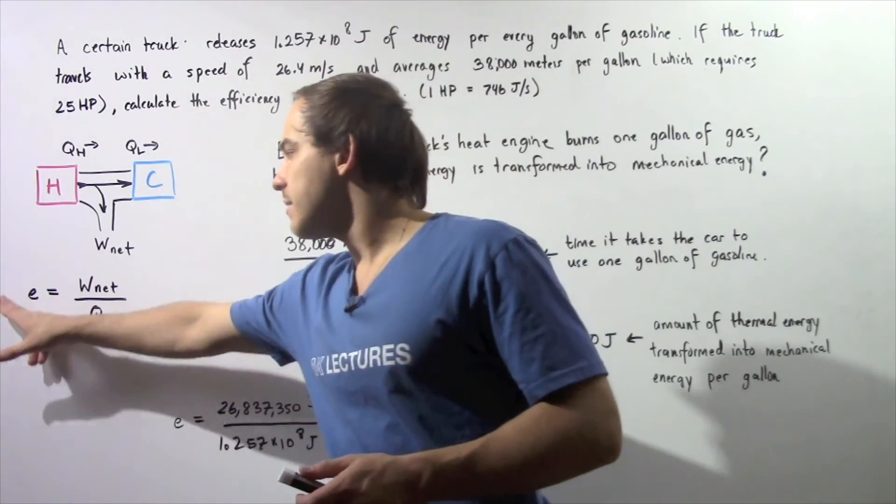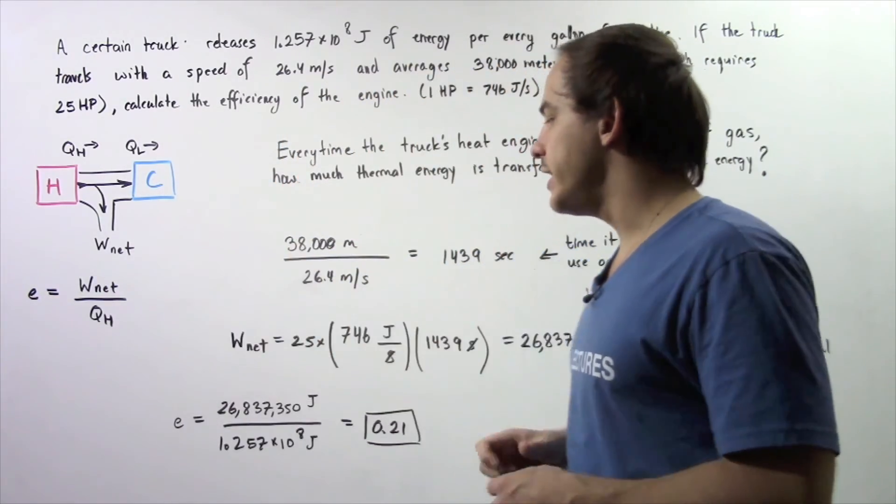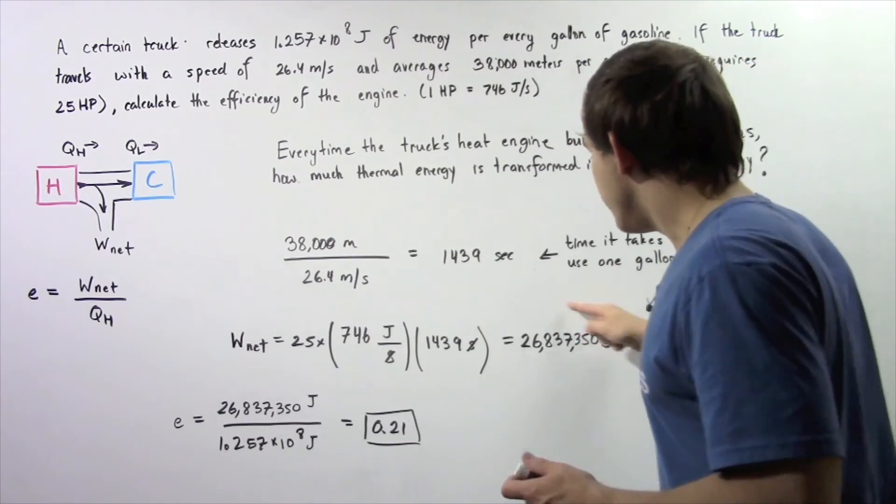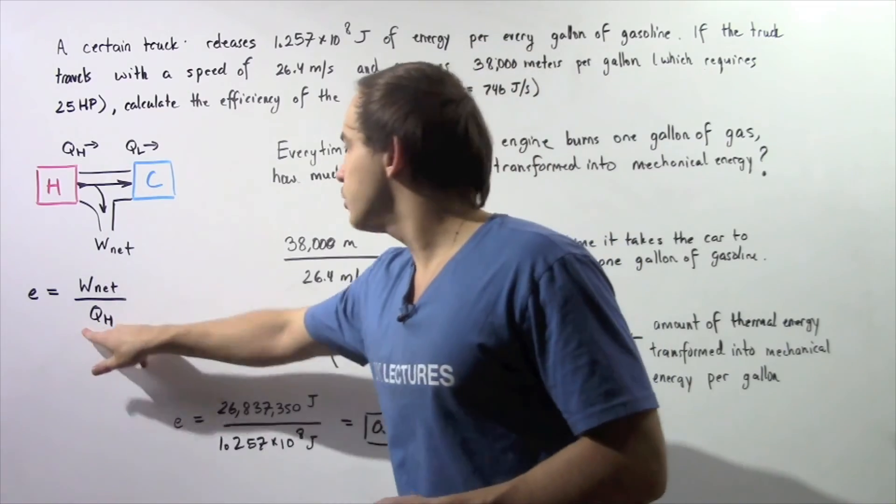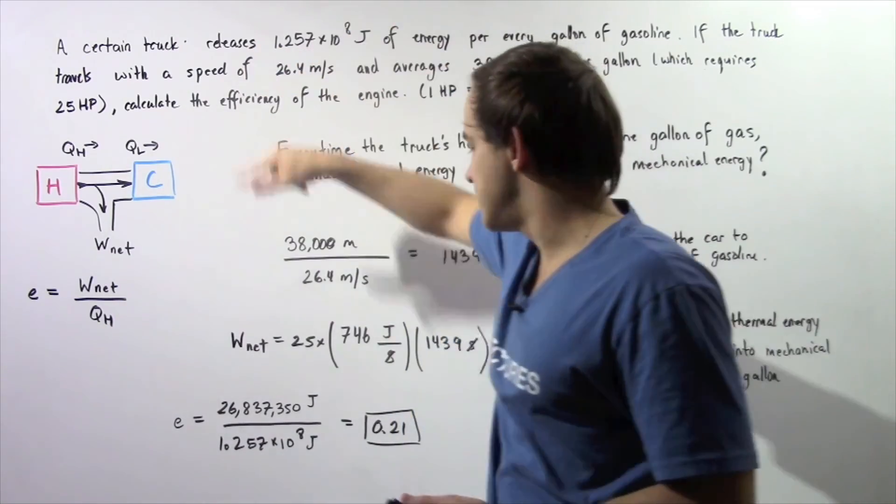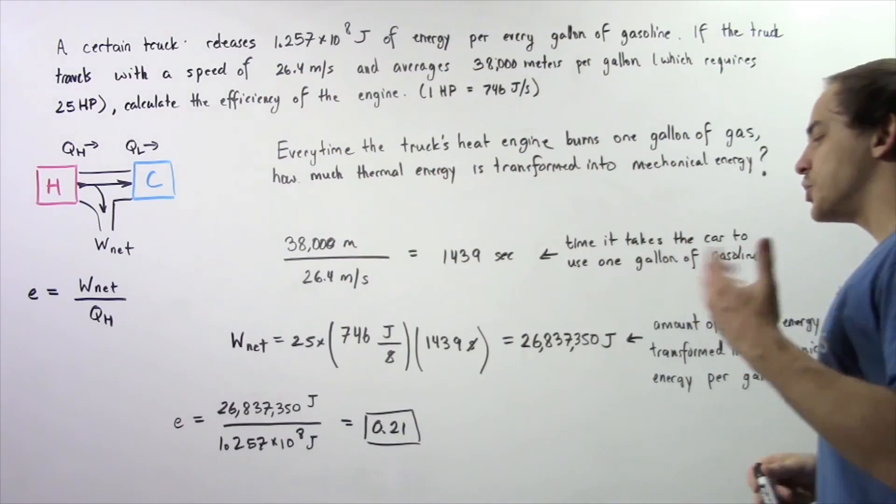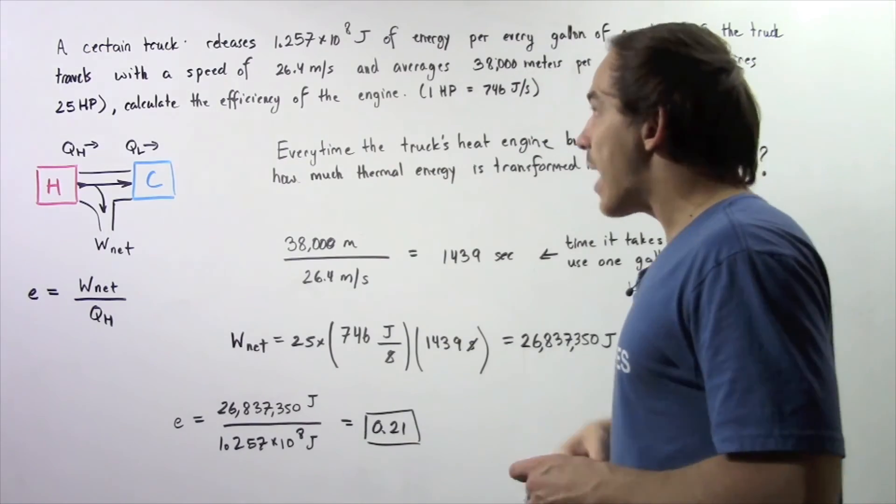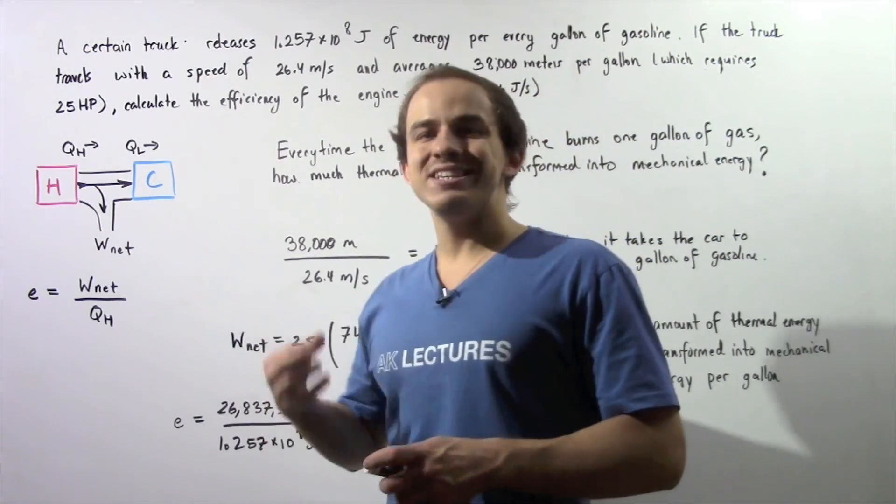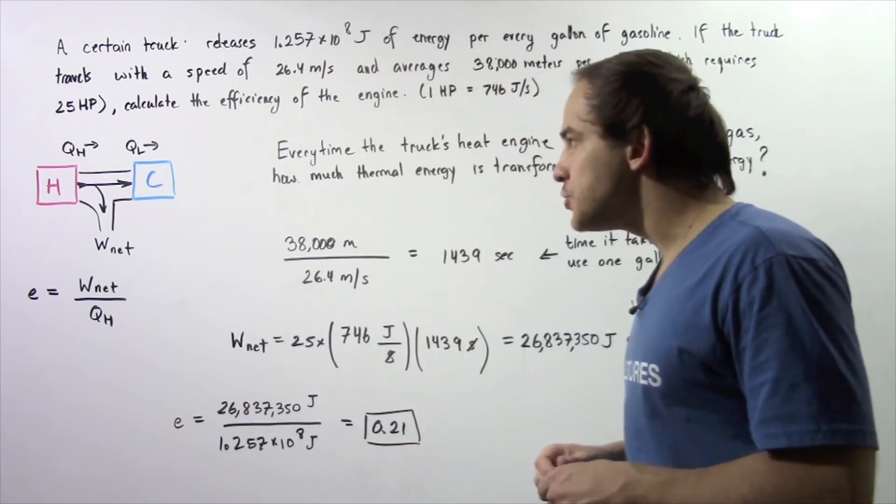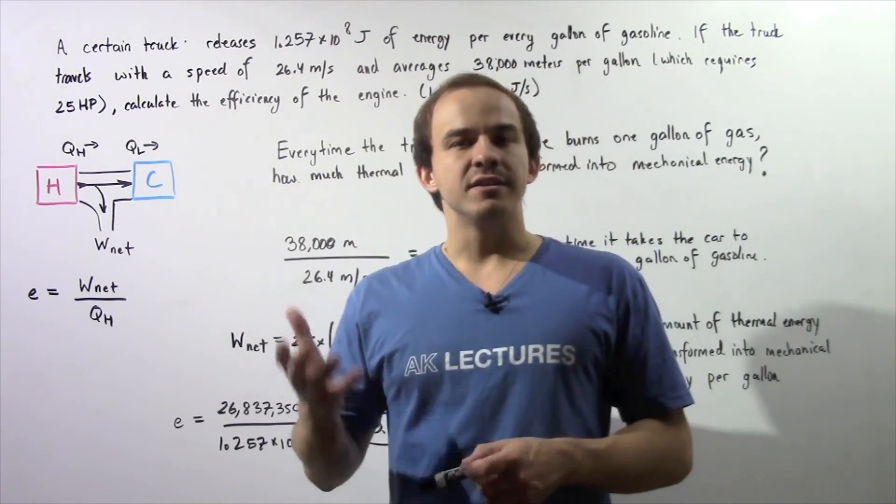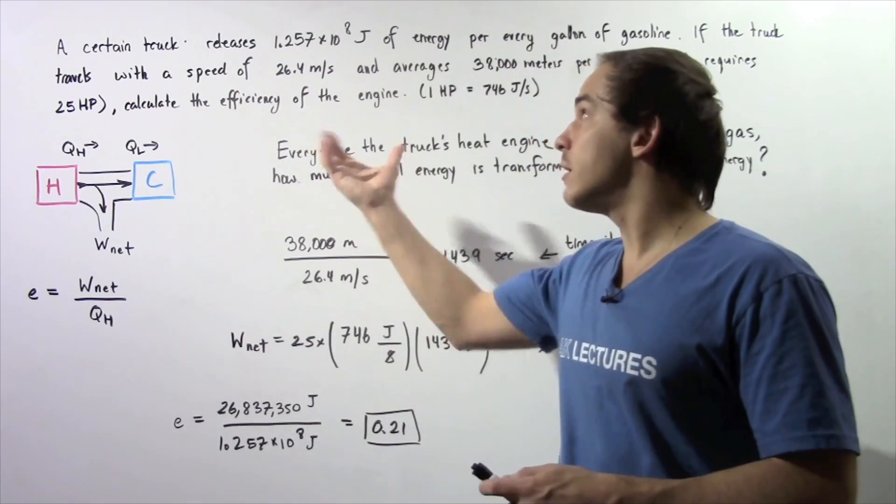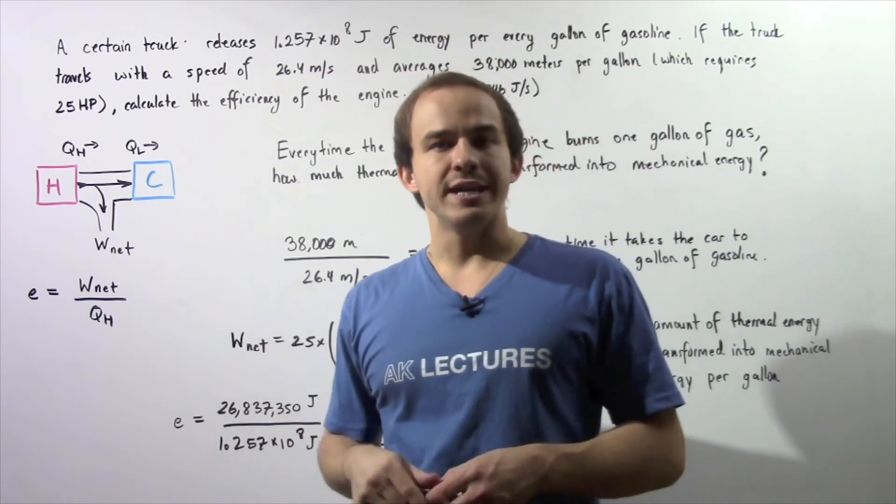In the final step, we take this equation and we use it. So we take this value, which is our network, and we divide it by the QH, which is this quantity, and we get about 0.21. So our heat engine is 21% efficient in converting thermal energy into mechanical energy. So one-fifth of that heat is converted into work.